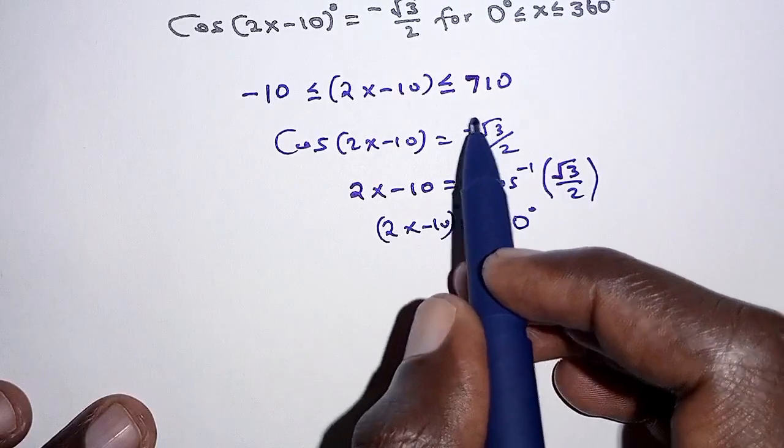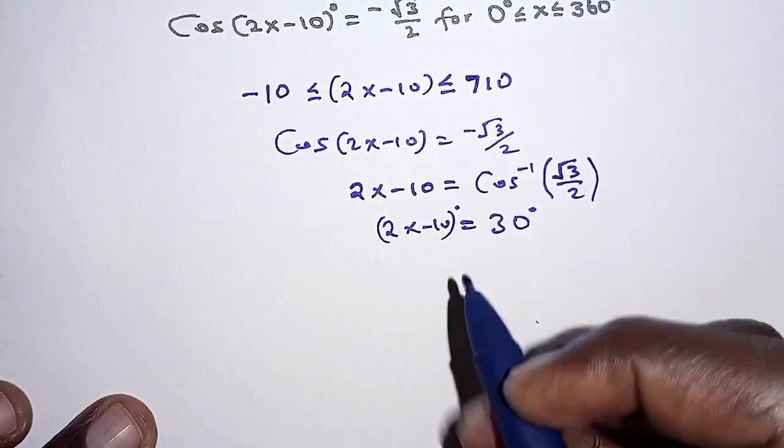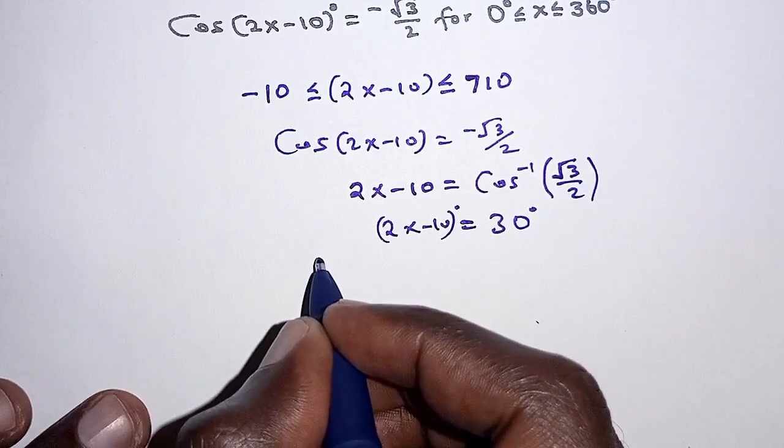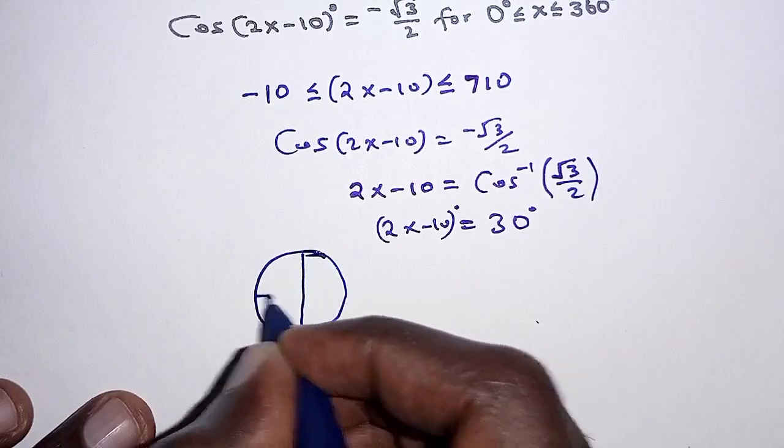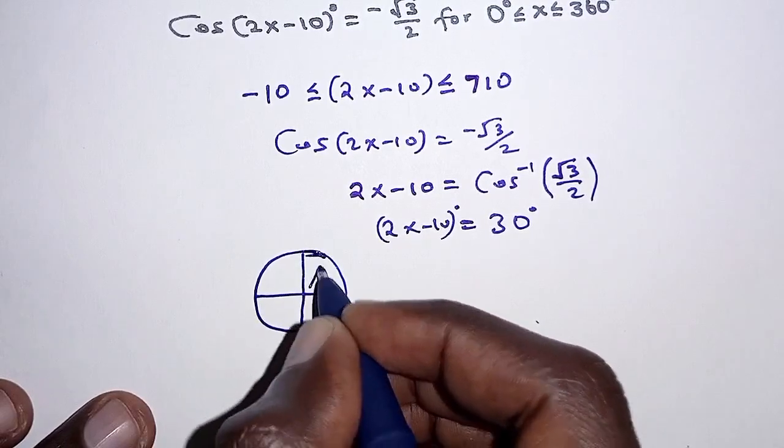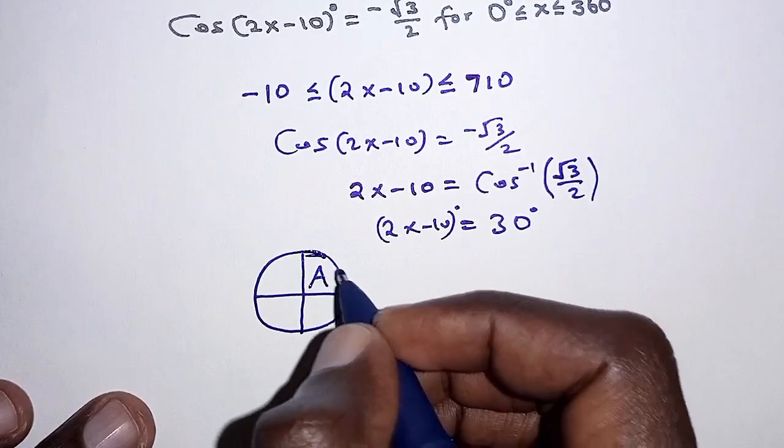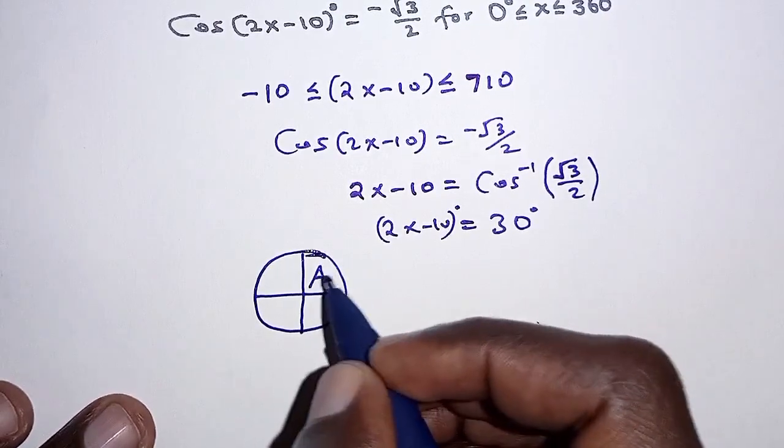We had ignored the negative sign here, so that sign we are going to interpret on the unit circle. So we have A for all,